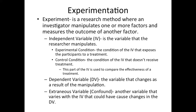Cook and Campbell said that in order for something to be a cause, it has to have three properties. The first property is temporal precedence: the cause must always precede the effect. One problem with correlation was we didn't know if factor A led to B or B led to A. With a causal relationship, factor A always leads to B, not the other way around.